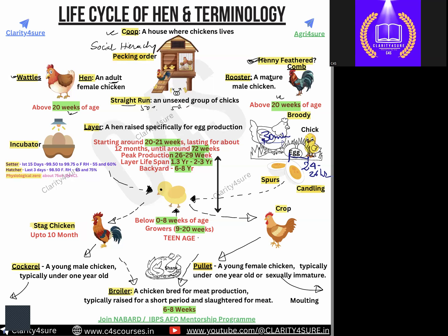Once the birds are above 20 weeks, they are sexually mature. Since they are sexually mature, they will mate. Once mating is done, we get a layer hen. A layer hen is a hen that has the ability to produce eggs — the word layer comes from laying eggs. Laying starts from around 20 to 21 weeks once they have attained sexual maturity.